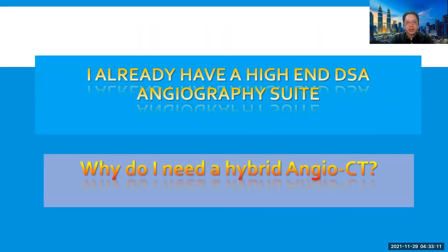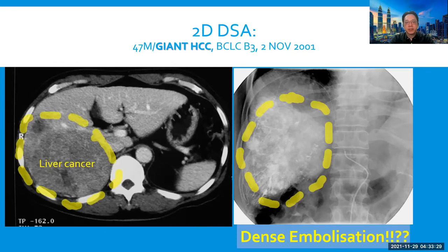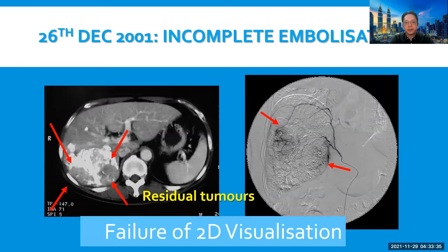Many IRs already have a high-end DSA angiography suite. Why do I need a hybrid Angio CT then? This is a case of giant HCC embolized in the year 2001 using lipiodol. Geographically, it appears that the tumor is densely ablated. However, on the follow-up CT scan, large areas of viable tumor nest are still visualized. This is the result of failure of 2D visualization.